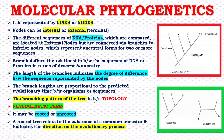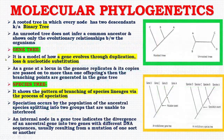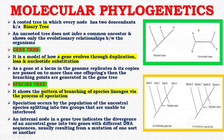The branch lengths are proportional to the predicted evolutionary time between organisms or sequences. A phylogenetic tree may be rooted or unrooted. A rooted tree refers to the existence of a common ancestor and indicates the direction of the evolutionary process. A rooted tree in which every node has two descendants is known as a binary tree. An unrooted tree does not infer a common ancestor and shows only the evolutionary relationship between the organisms.